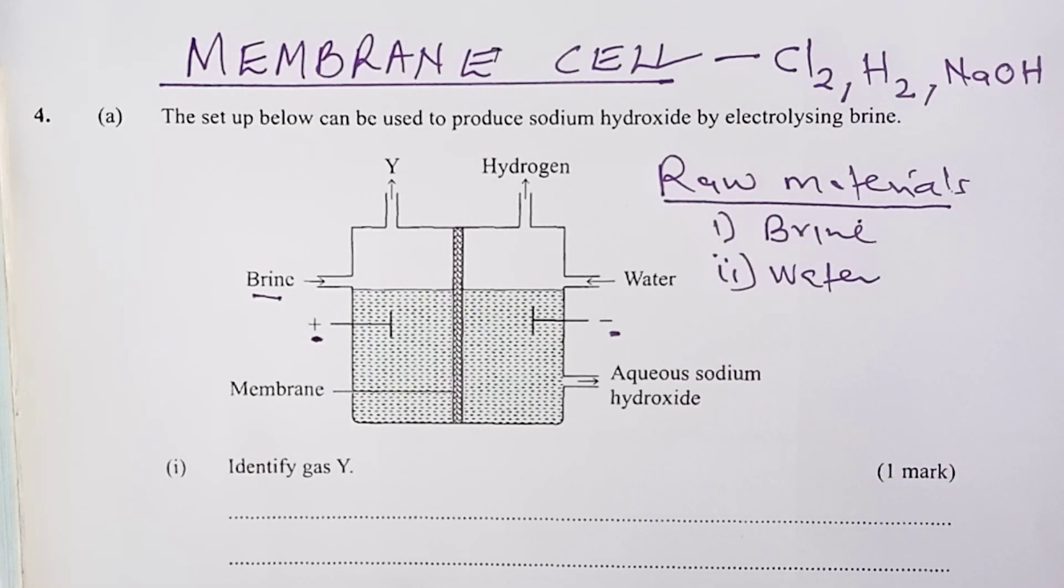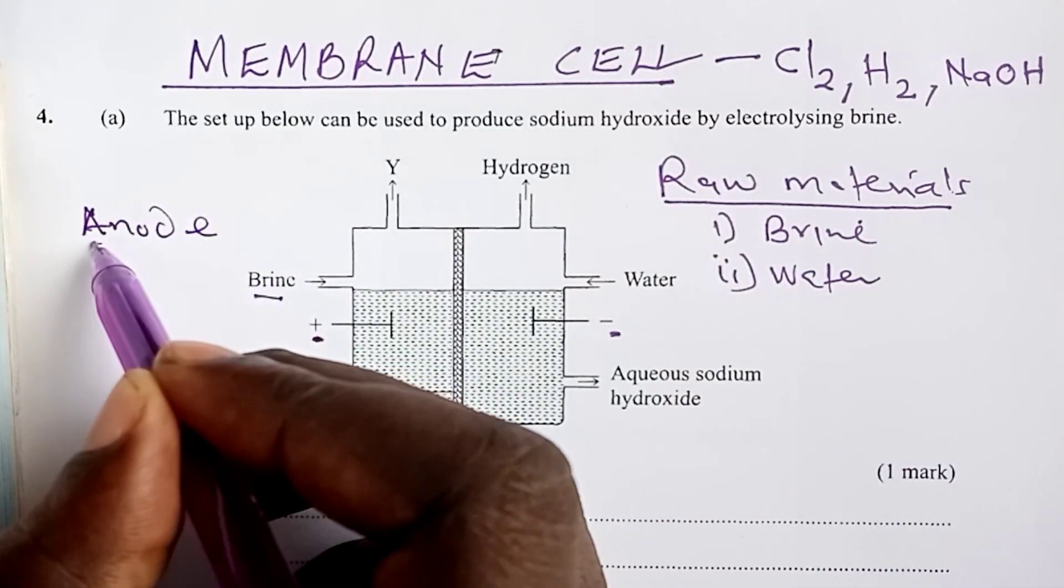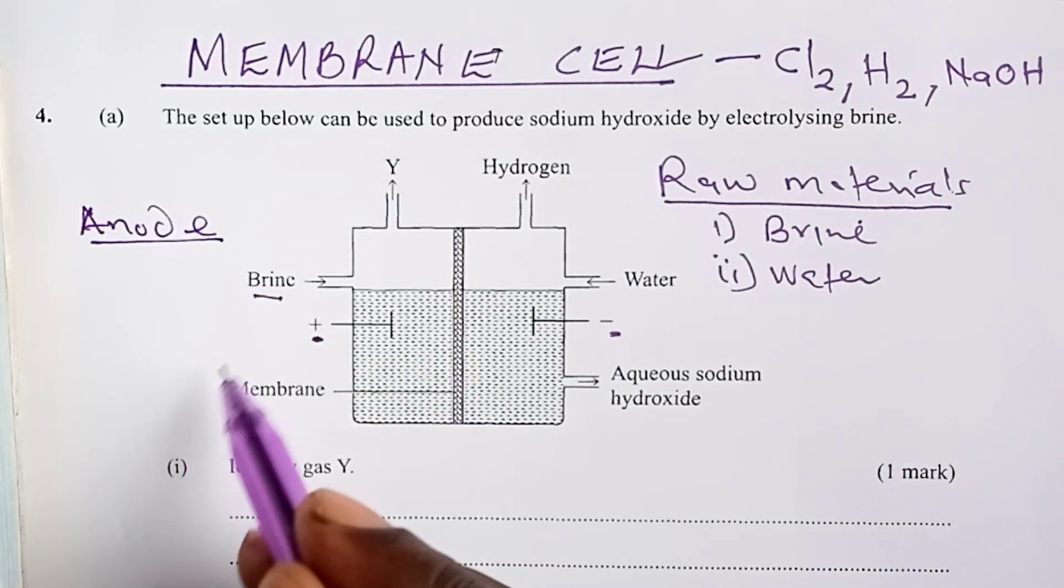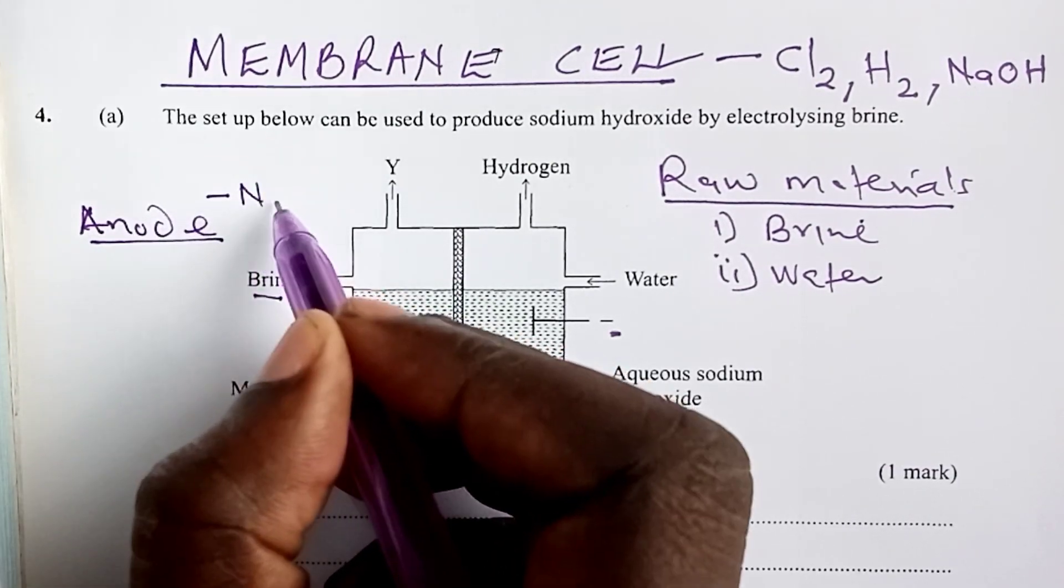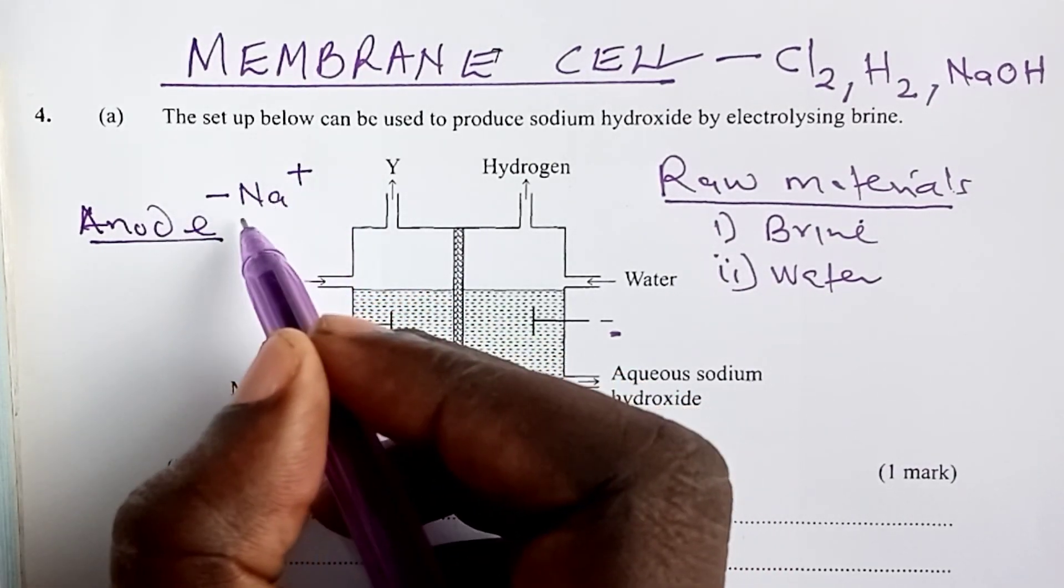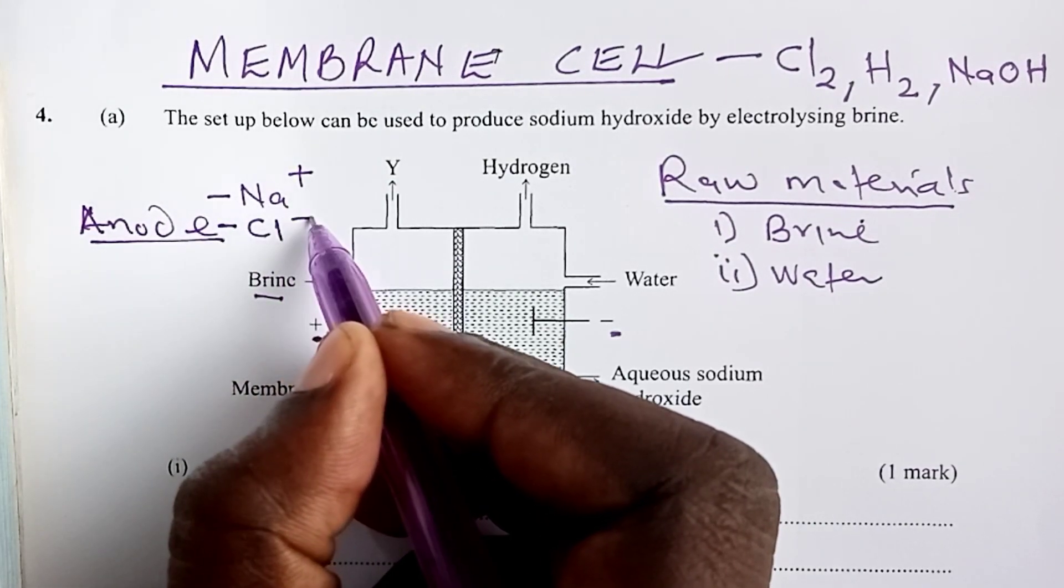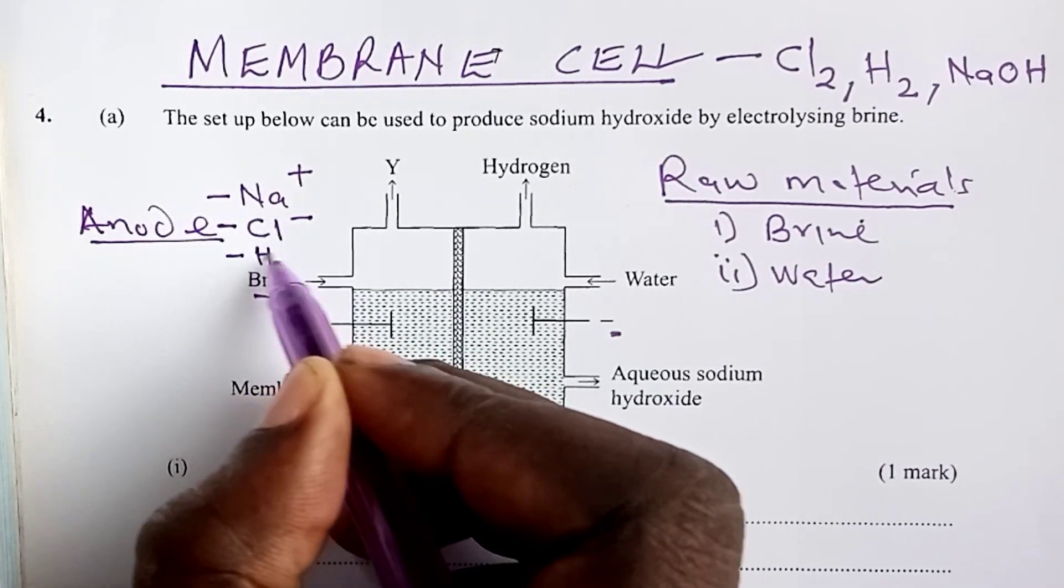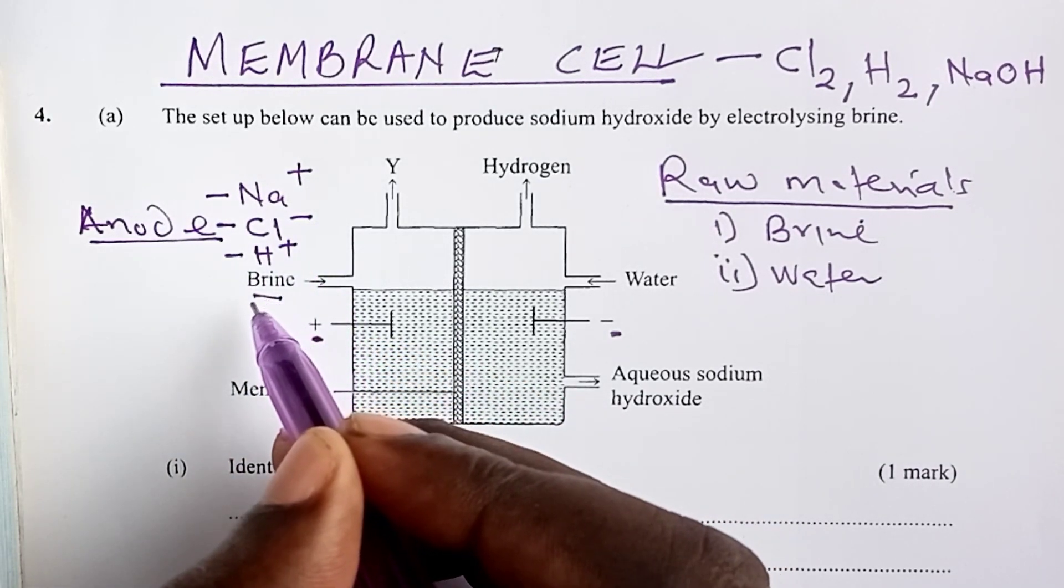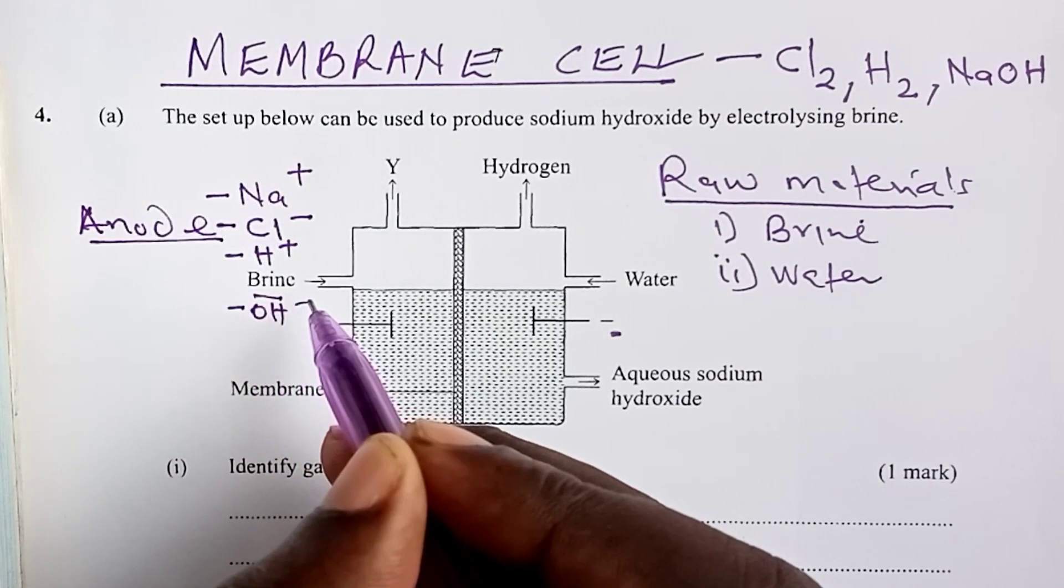So, having looked at the raw materials, let us go ahead and explain what happens at the anode. At anode, we have brine, and brine has four ions: sodium ions being highly concentrated, chloride ions also highly concentrated, but then we also have a bit of hydrogen ions from the little water that is there in brine, and hydroxyl ions.